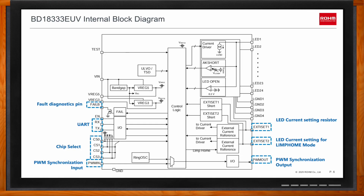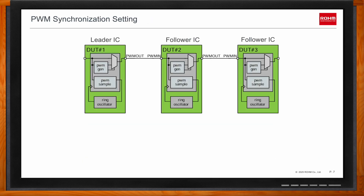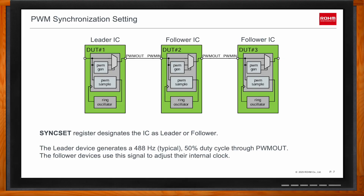Let's talk about the PWM phase setting. This feature allows a leader device to synchronize its internal clock with downstream follower devices. Whether a part is a leader or a follower is configured through the internal sync set register. The leader device generates a 488 Hz reference signal out through the PWM Out pin, which follower devices use to adjust their internal clock — allowing for greater precision in the timing of lighting animations. In the figure, the leader IC generates the reference signal through PWM Out, device two receives it through PWM In, adjusts its own internal oscillator, then passes it down to device three and so on.